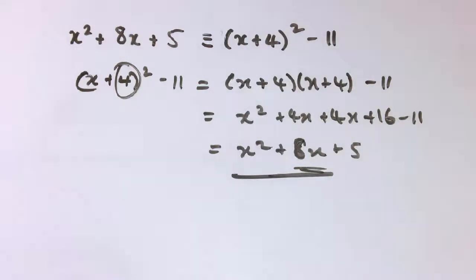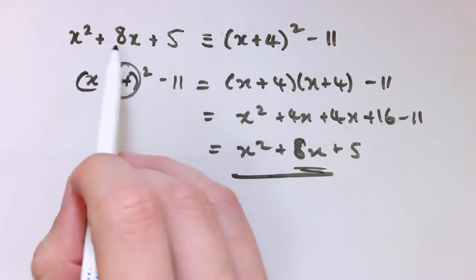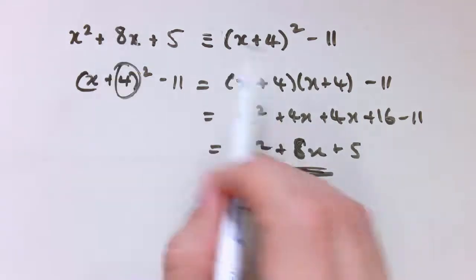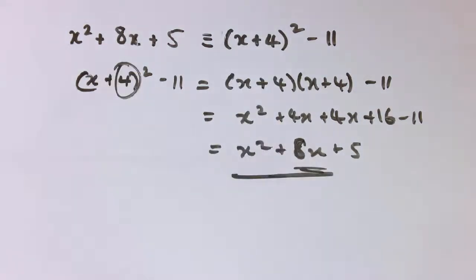So when I'm looking for my completed square form, something like this, where it's just x² plus some number of x, I'm just going to halve that value of x, put it in brackets, square it, and then see how I need to adjust my answer.